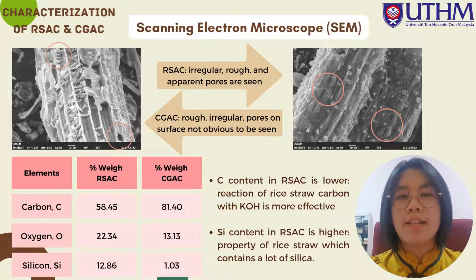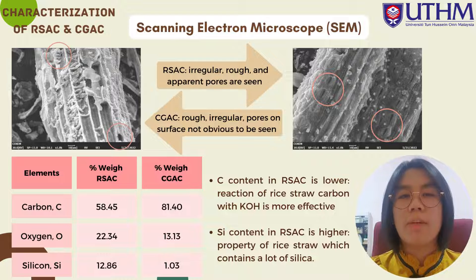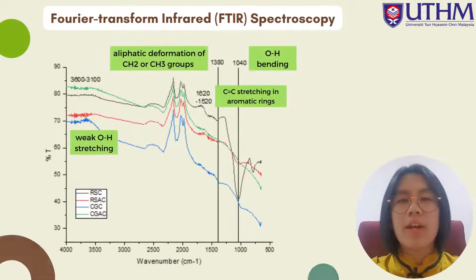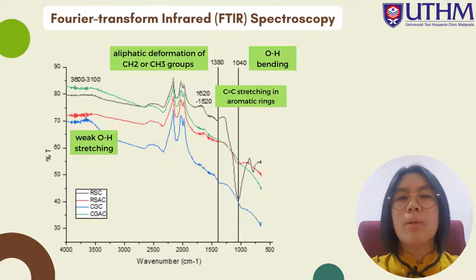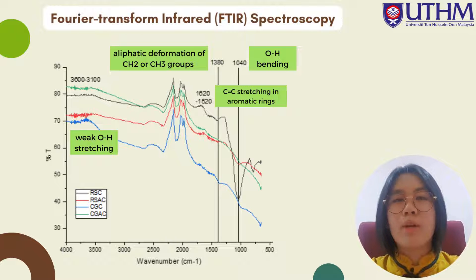The elemental analysis results from SEM demonstrate the composition of elements in both activated carbons. For both, the main elements are oxygen, carbon, and silicon. It is expected that a large amount of carbon is decomposed by potassium hydroxide during chemical activation. The carbon content in rice straw activated carbon is lower, indicating the reaction with potassium hydroxide is more effective. Silicon content in rice straw activated carbon is higher due to the property of rice straw, which contains a large amount of silica. For the FTIR spectra, the peaks appearing for both carbons and activated carbons are mostly similar. This is indicated by the presence of weak OH stretching, aliphatic deformation of CH₂ or CH₃ groups from dehydration and decomposition of volatile matter, and carbon-carbon bond stretching in aromatic rings. OH bending occurs only for rice straw. Overall, the functional group of rice straw obtained in this study resembles previous studies.